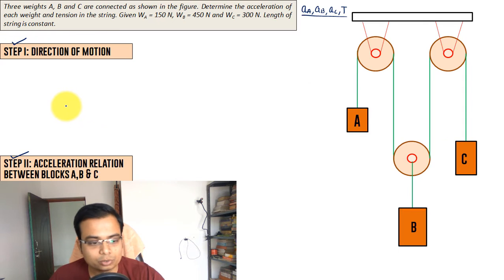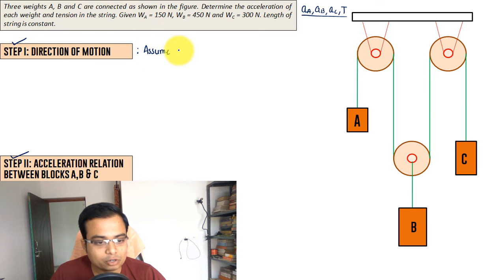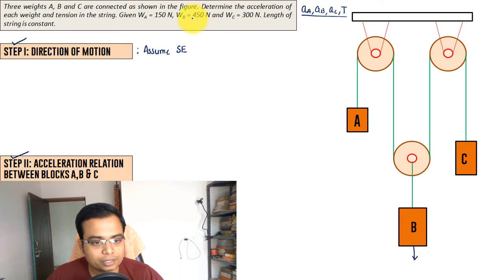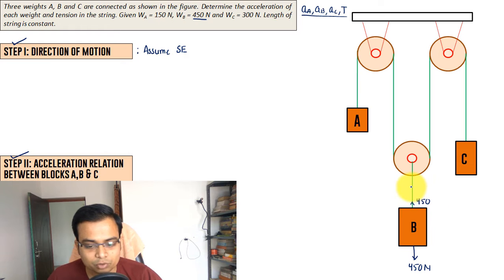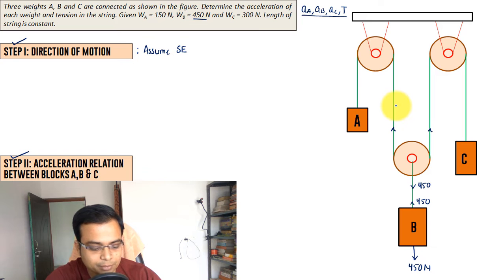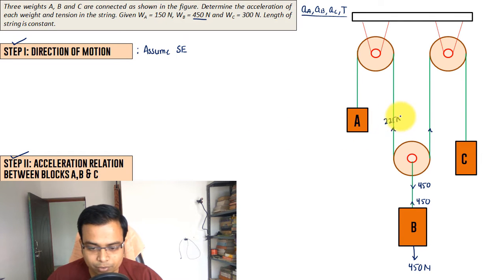First, assume static equilibrium — nothing moves. Block B has a weight of 450 newtons. This pulley is being pulled by a force of 450N, which is divided by two on each side. So the tension in this portion of the string is 450 divided by 2, which equals 225 newtons. The tension is 225 newtons on both sides — that's the same string.